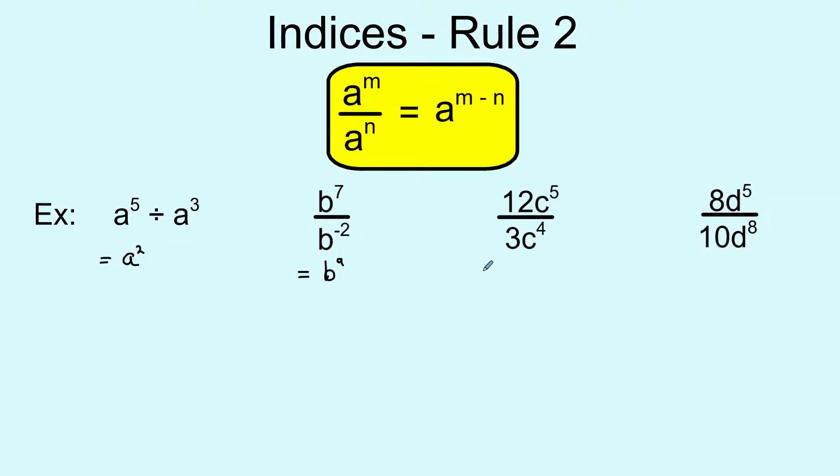Next example, here again we've introduced numbers. Quite common that you come across that in exam and past paper type questions. The key thing is that you treat them exactly as you normally would. You're dividing two numbers, 12 divided by 3 is 4, so that doesn't change here. Our indices rules only kick in when we're dealing with powers.